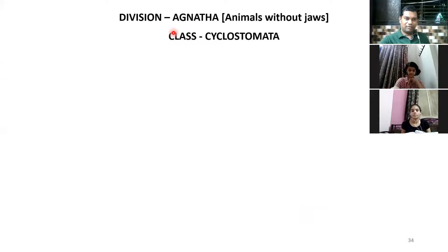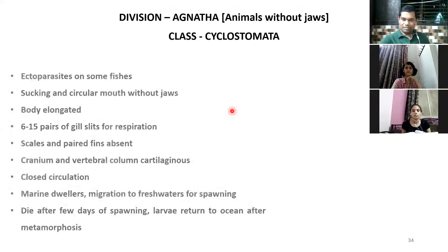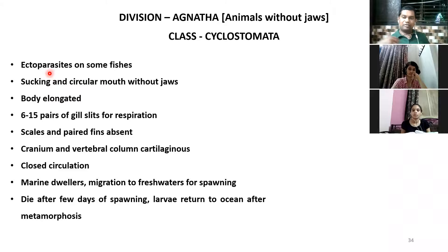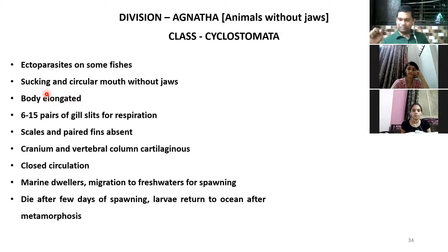Let's do Cyclostomata quickly. These are animals without jaws — Agnatha — under which there is a class called Cyclostomata. They are ectoparasites, living as parasites on the outside of another animal's body. These animals have a circular mouth which is of a sucking type; they do not have any jaws.